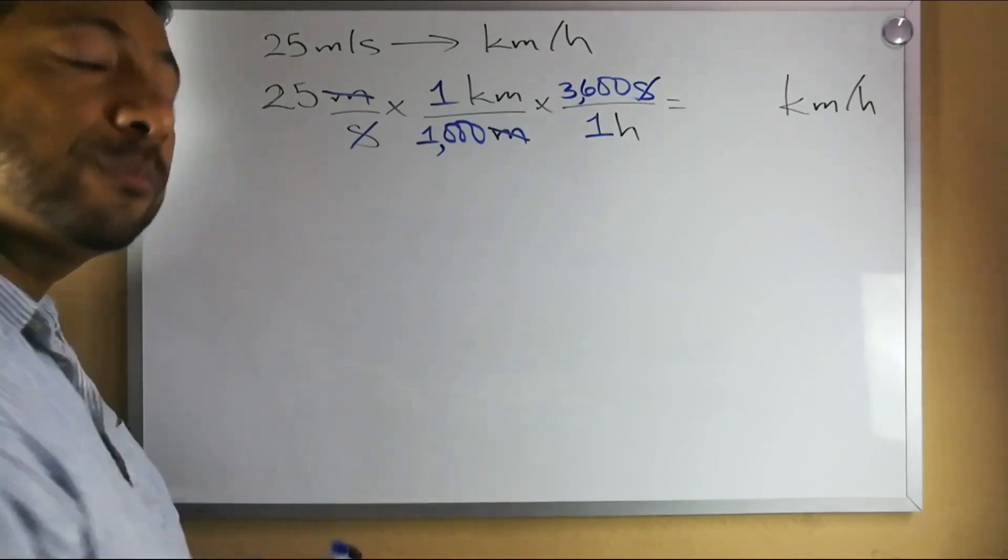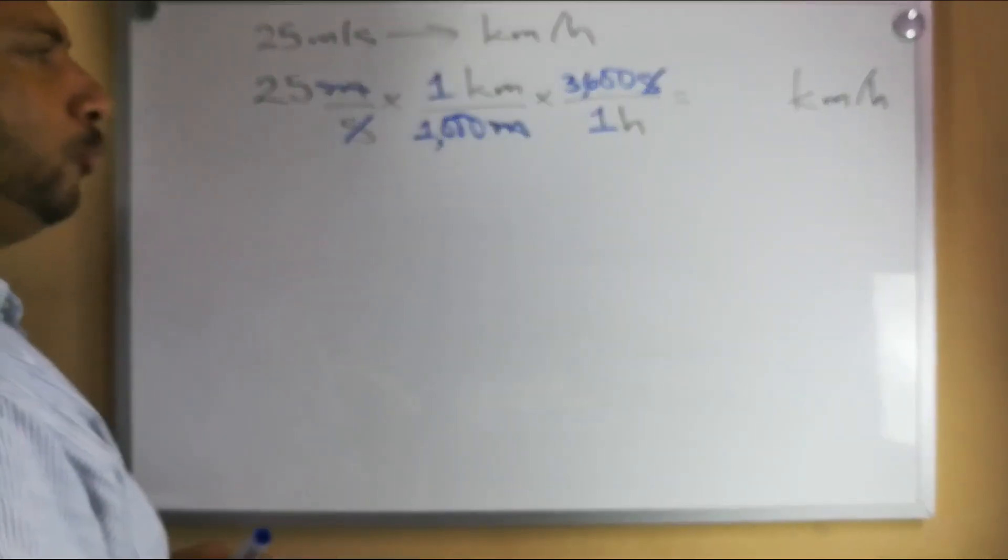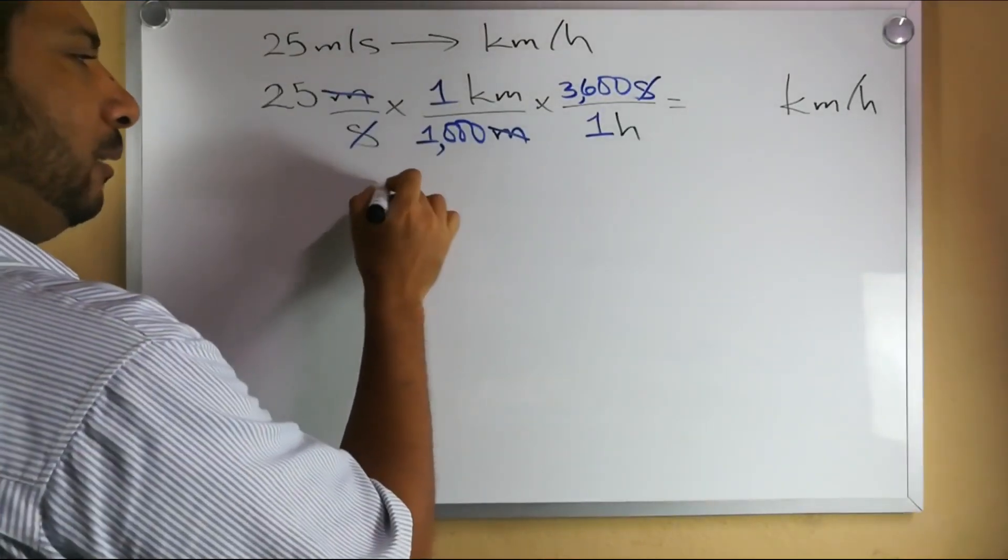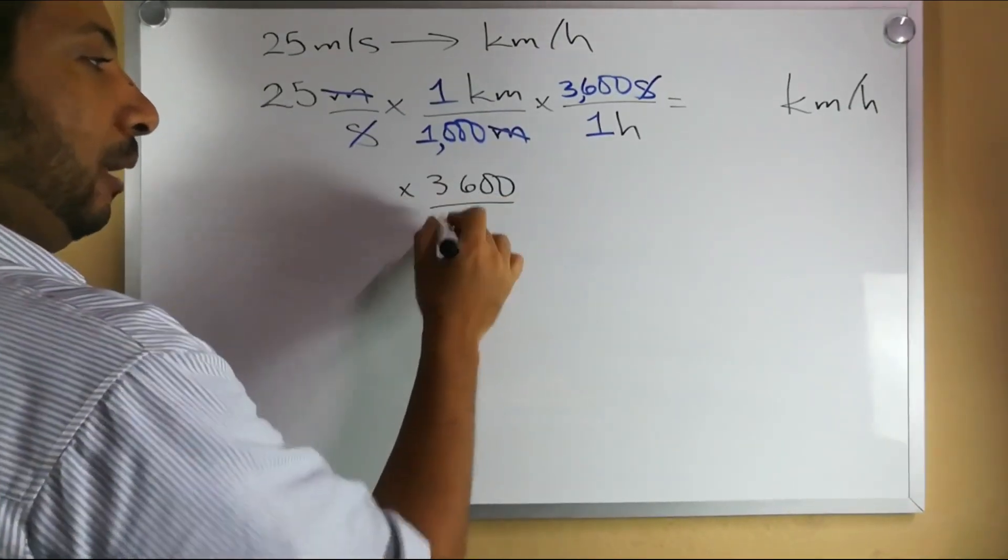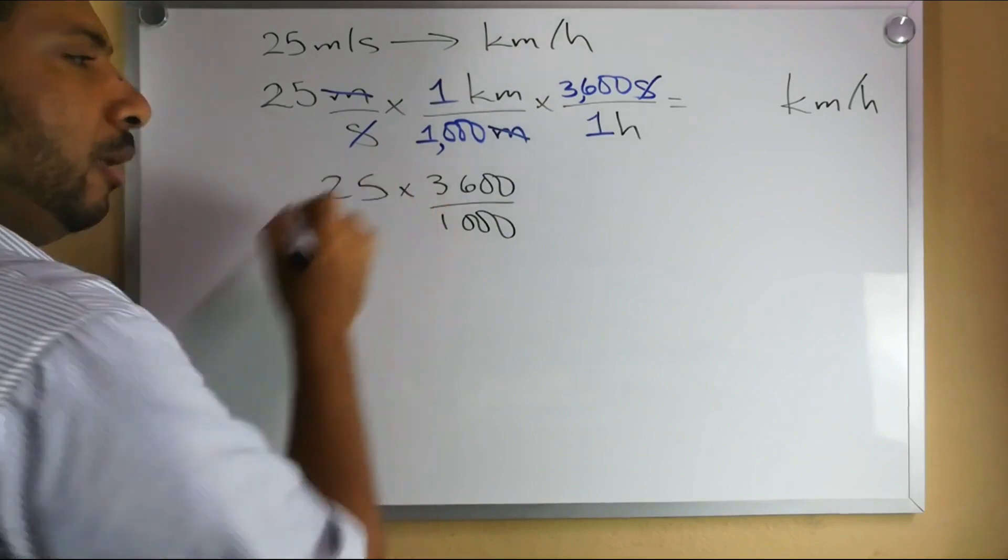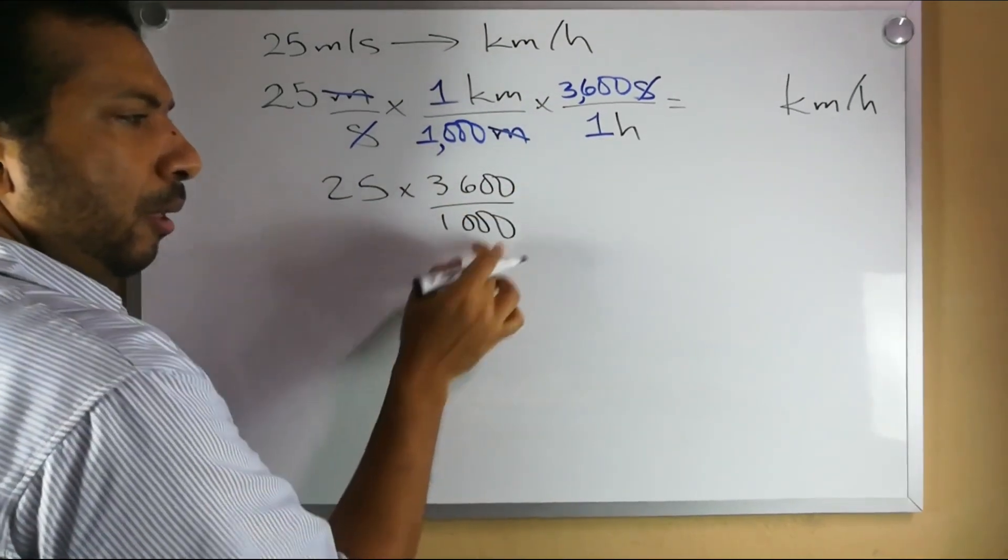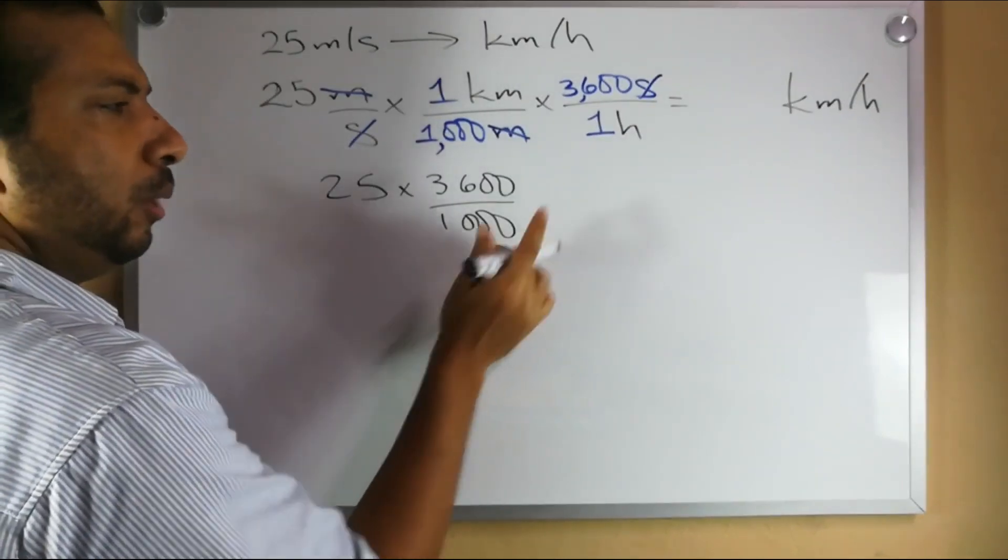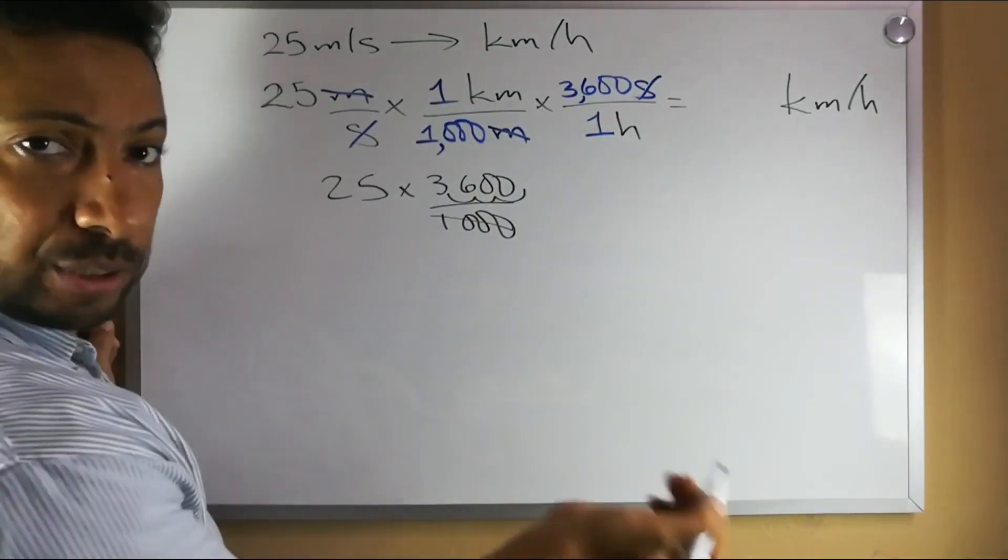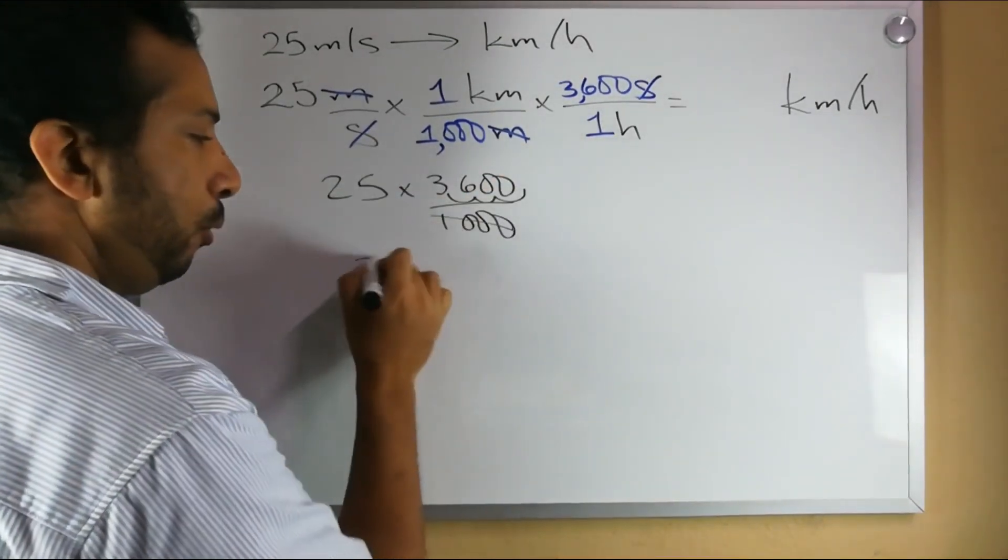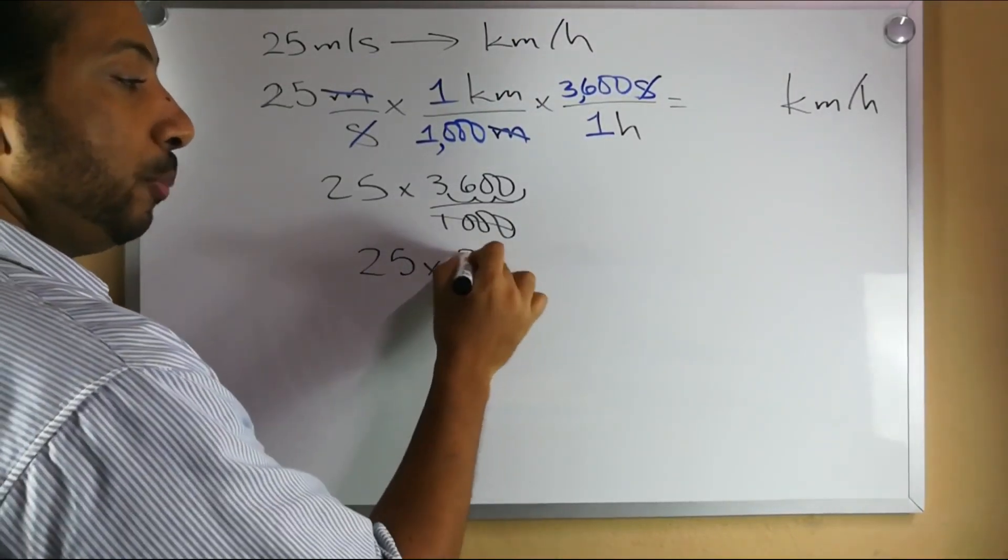Now when I look at these two values in particular, I am doing what to the 25? I am multiplying 25 times 3600 but I am dividing it by 1000. But if I multiply 3600 and then divide by a thousand, what am I really doing? Well if I take 3600 and divide it by a thousand, I am actually just multiplying by 3.6.